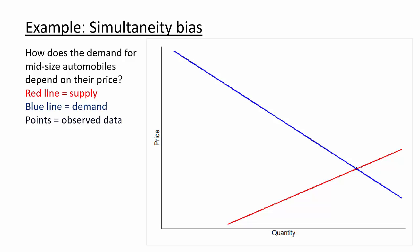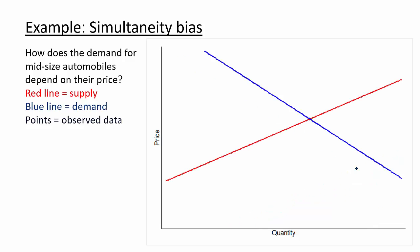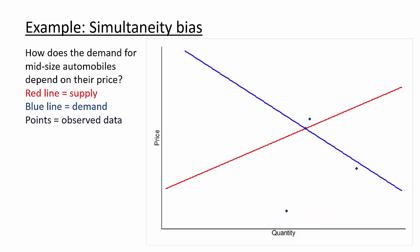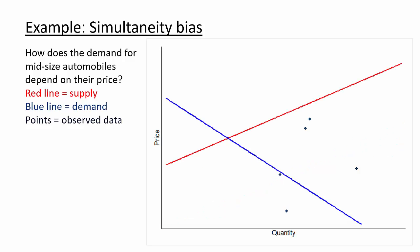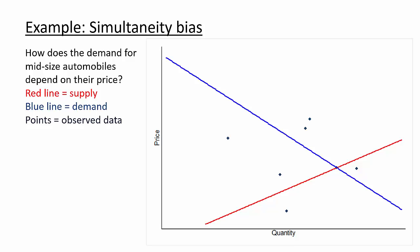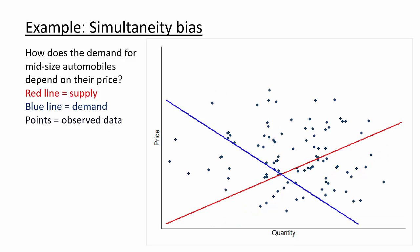Suppose we collect more data on prices and quantities by waiting for both supply and demand to shift over time. Even if we collect a large amount of data, the points won't trace out a demand curve, or a supply curve for that matter. Here is the OLS estimate for this simulated dataset, which clearly is a poor estimate of the slope of either the supply or the demand.